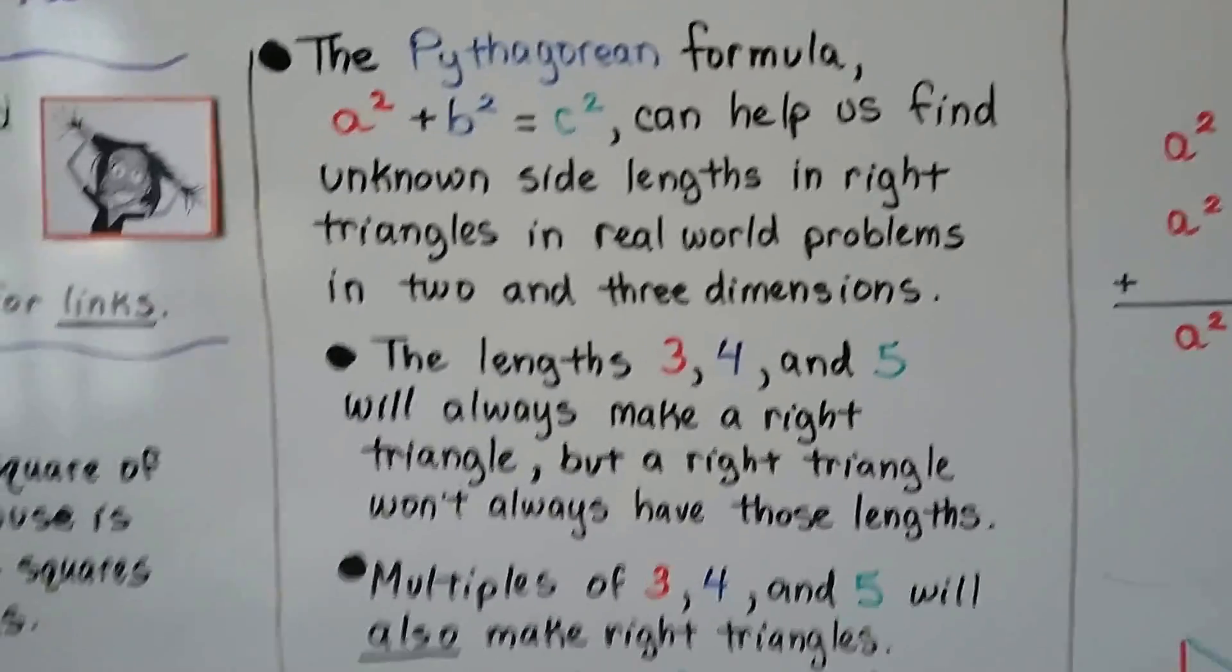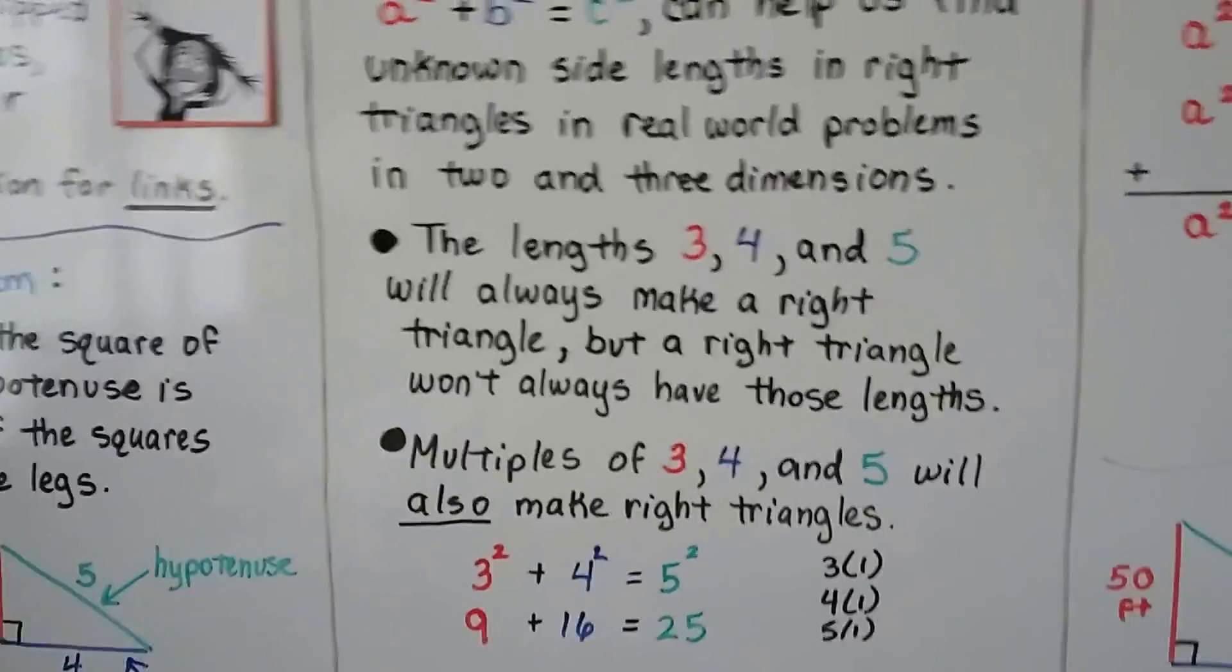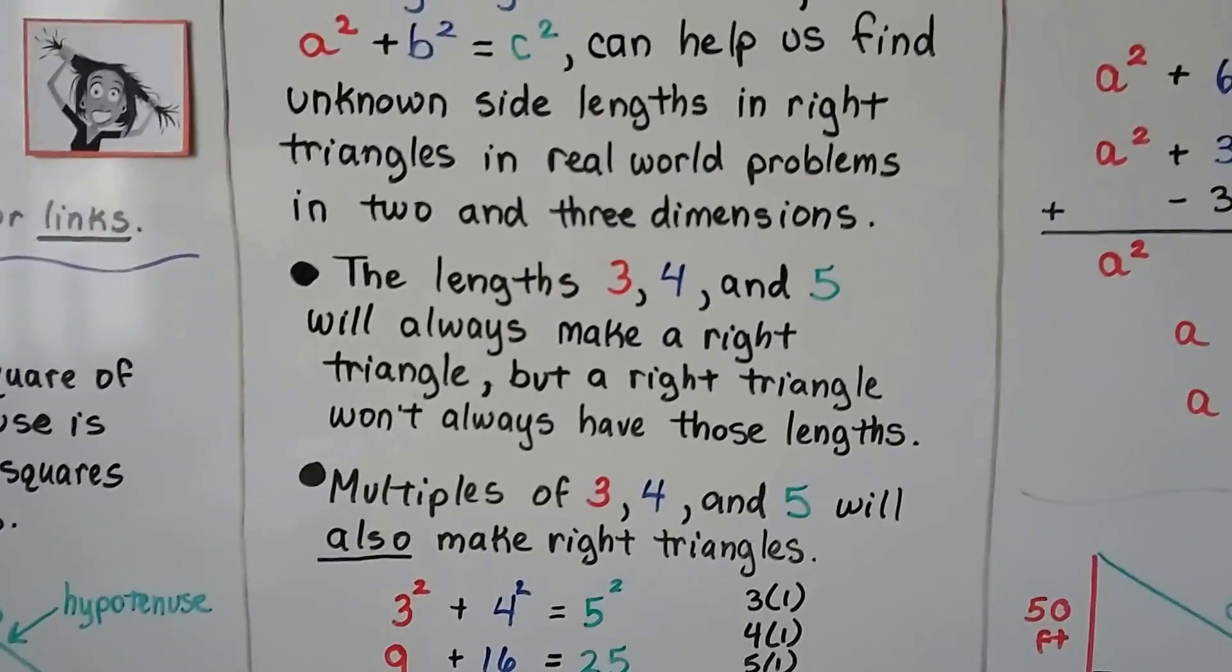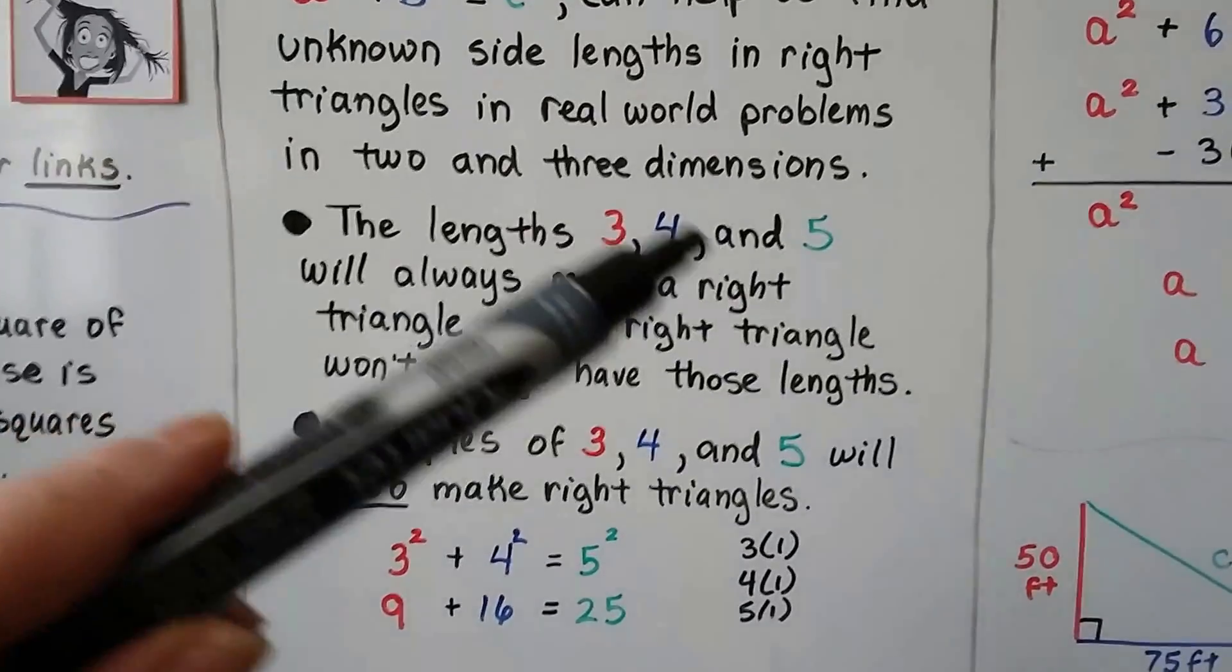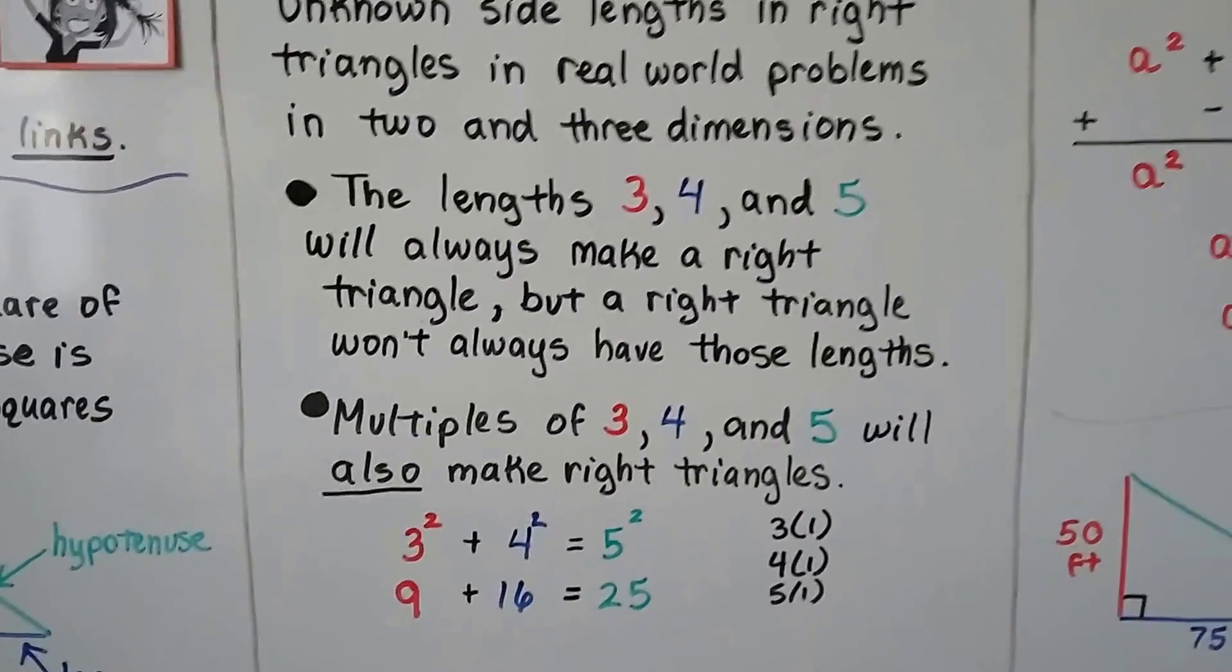And the lengths 3, 4, and 5, like we had in this one, will always make a right triangle. But a right triangle won't always have those lengths. So, 3 and 4 and 5 are special to the Pythagorean theorem.